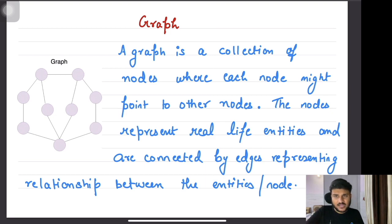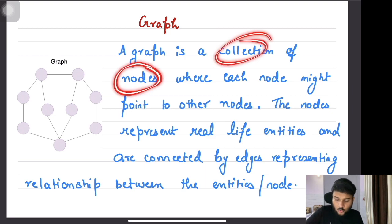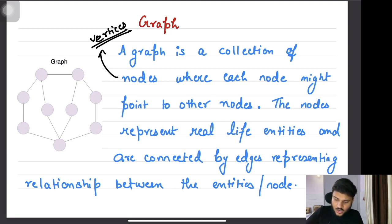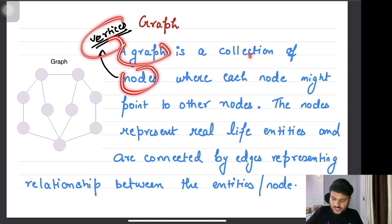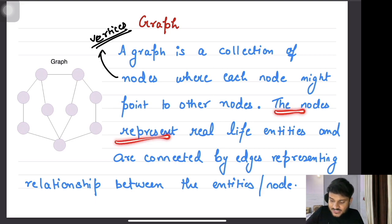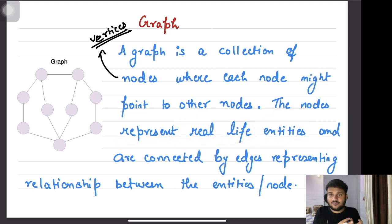So what are graphs? A graph is a collection of nodes — sometimes these nodes are also called vertices. So a graph is a collection of vertices or nodes where each node can point to another node. These nodes represent real life entities, and in a lot of applications these nodes are going to represent some real life entities, which we will also see in some applications of graphs.